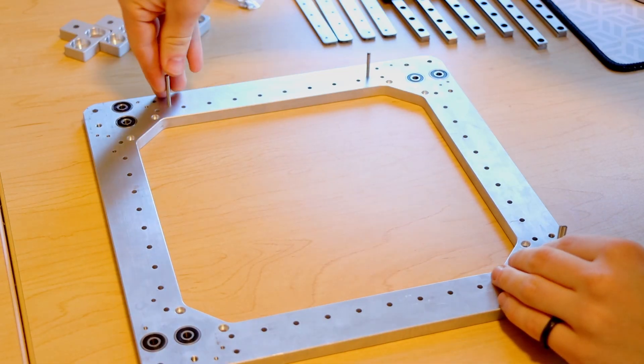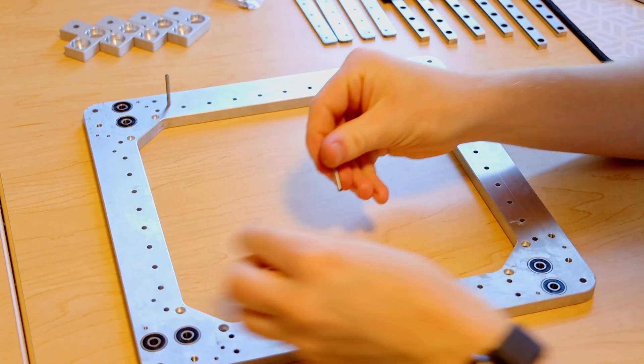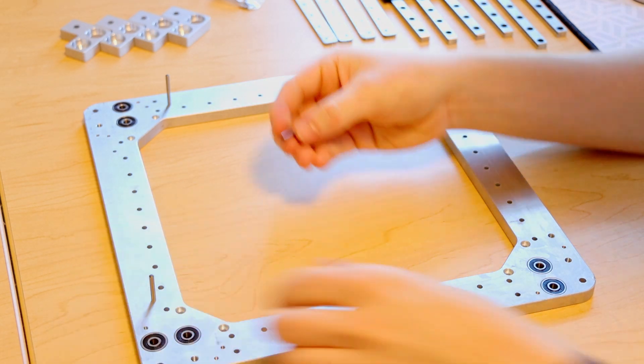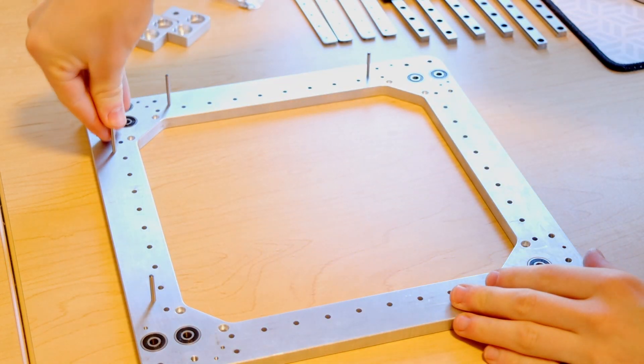So now I'm pressing in these dowel pins into these reamed holes in the frame and I'll be using these as alignment features when I install the linear rails.